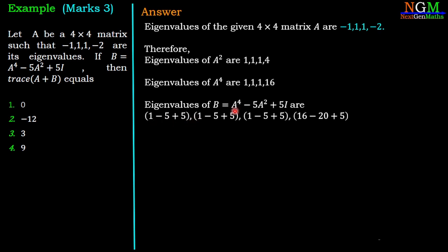Similarly, the second eigenvalue of B: eigenvalue of A⁴ is 1, minus 5 times eigenvalue of A² which is 1, plus 5 times 1, giving 1 - 5 + 5 = 1. The third eigenvalue is similarly 1. For the fourth eigenvalue: eigenvalue of A⁴ is 16, minus 5 times eigenvalue of A² which is 4, plus 5 times eigenvalue of A which is 1, giving 16 - 20 + 5 = 1.